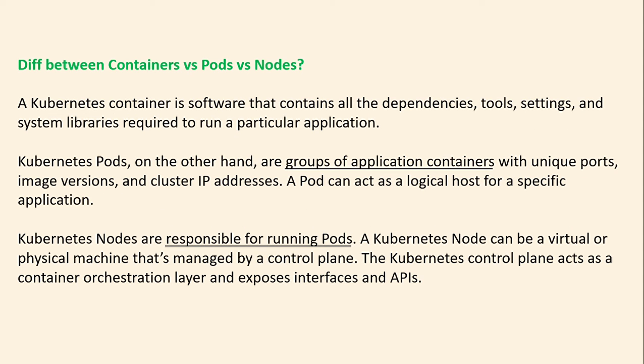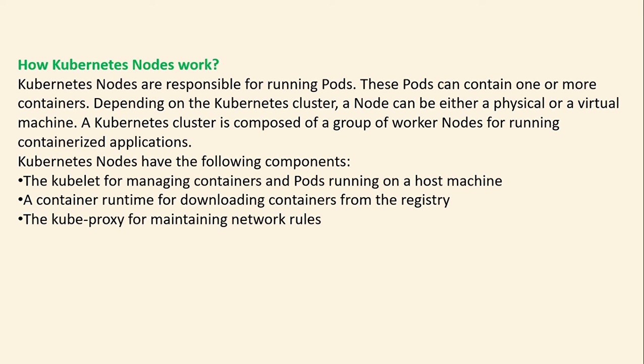Now let's see the difference between containers, pods, and nodes. A Kubernetes container is software that contains all the dependencies, tools, settings, and system libraries required to run a particular application. A Kubernetes pod, on the other hand, is a group of application containers with a unique port, image version, and cluster IP address. The pod can act as a logical host for a specific application. Kubernetes nodes are responsible for running pods and can be virtual or physical machines managed by a control plane.